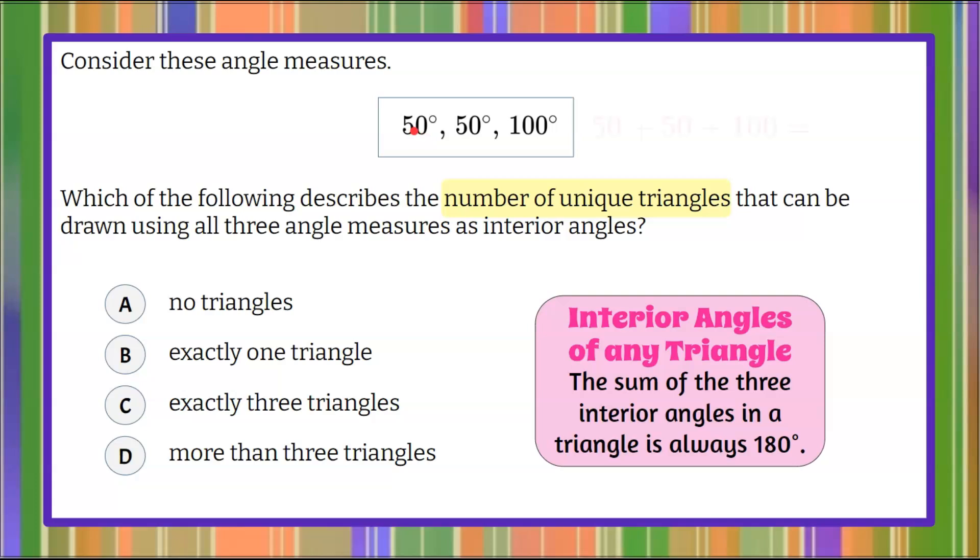So we're going to add 50 plus 50 plus 100. 50 plus 50 is 100. 100 plus 100 is 200. So seeing as the sum of these three angles is 200 degrees...